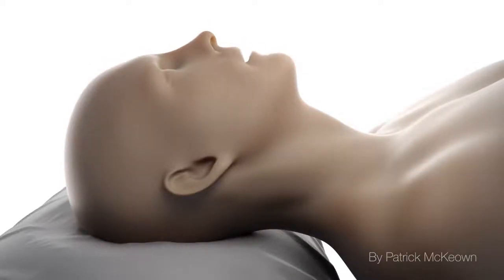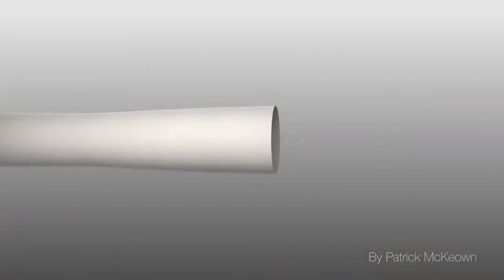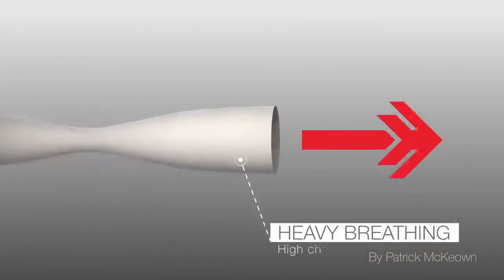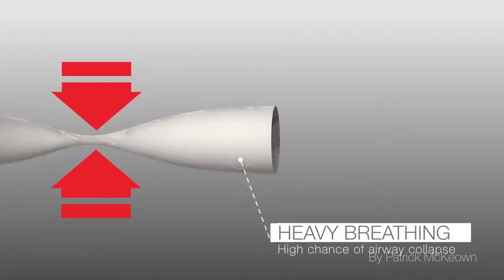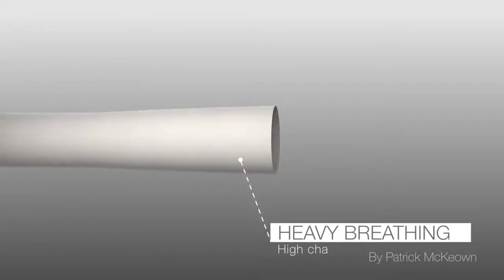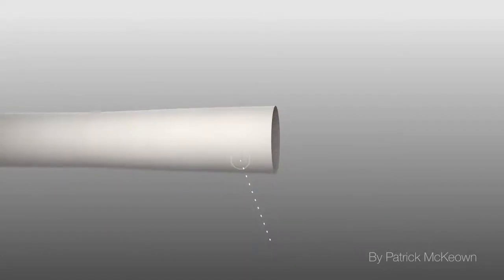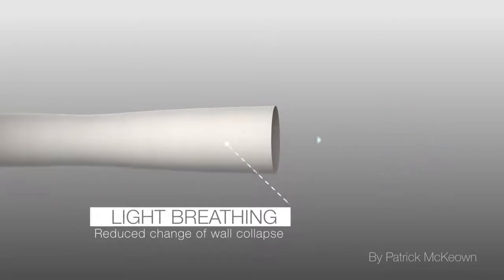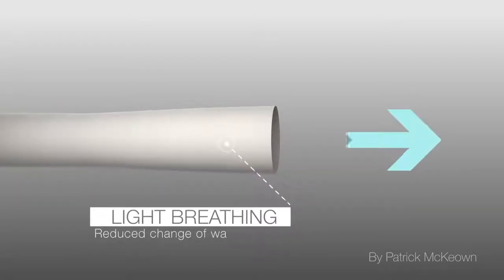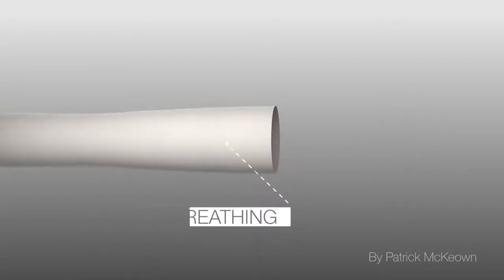Imagine inhaling a large volume of air through a collapsible paper straw. The heavier one breathes, the greater the likelihood of the walls of the straw collapsing inwards. On the other hand, breathing lightly through the straw causes less negative pressure, thereby reducing the risk of collapsing the walls.